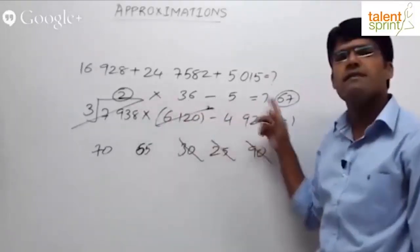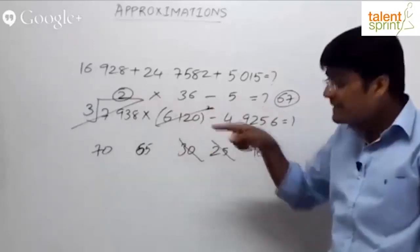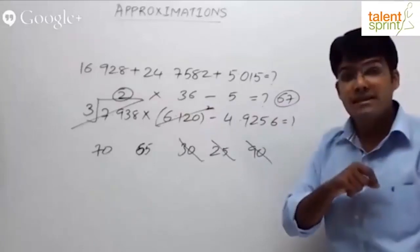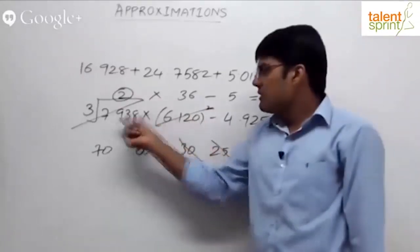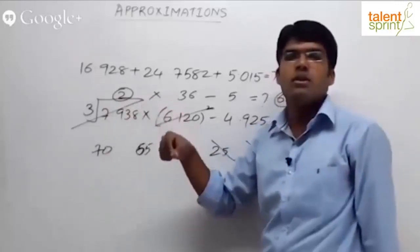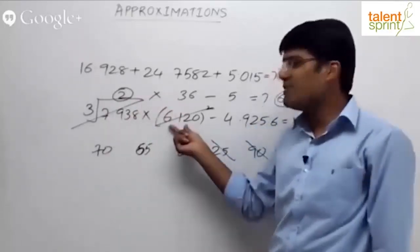So what do you do? 2 into 36 is 72 minus 5 is 67. Which one is the correct answer? In such a situation, you have to analyze: will the actual answer be more or less? How do you do that? 7.938, no doubt it's going to be very close to 2, because cube root doesn't really give you a huge difference.